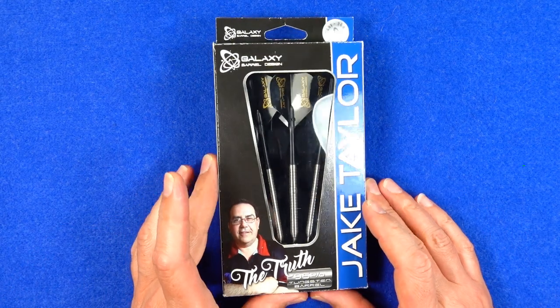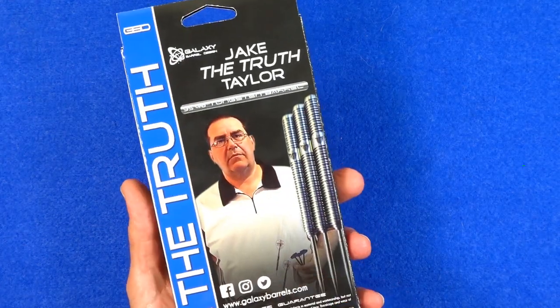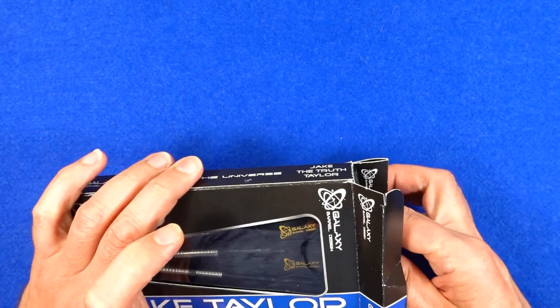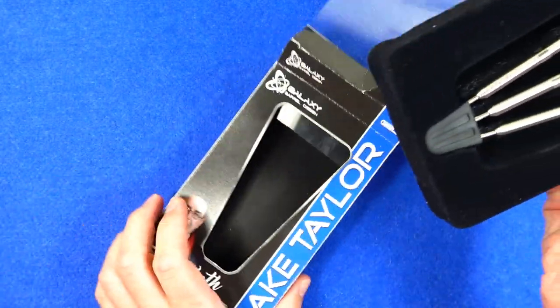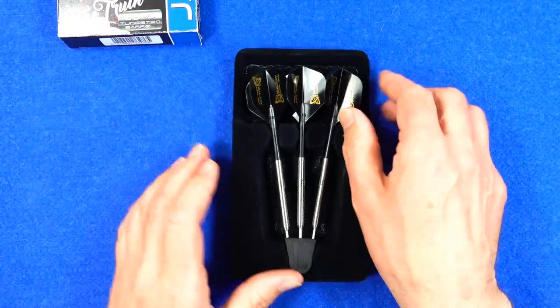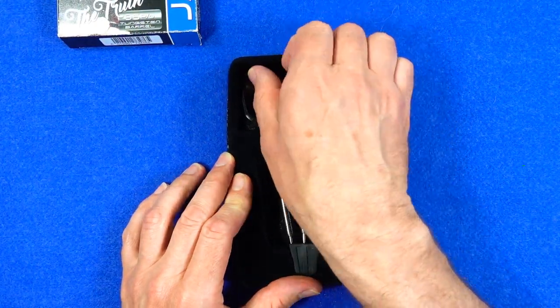As you can see it comes in this cardboard packaging with a picture of the player and the darts on the back, Jake The Truth Taylor. Inside you've got a plastic tray and the darts are fitted into a little point holder.